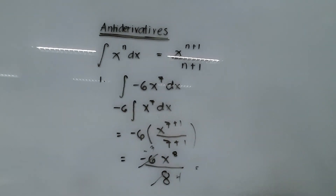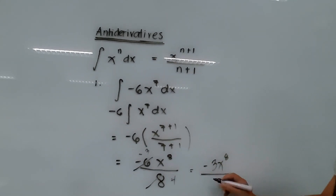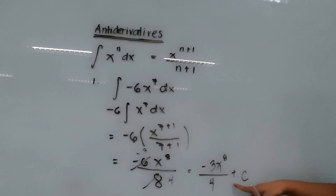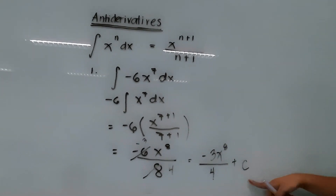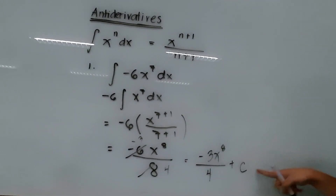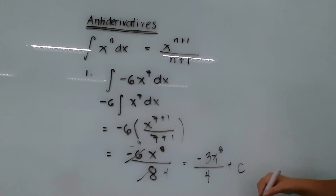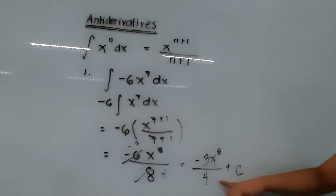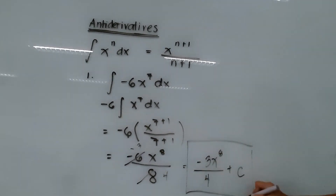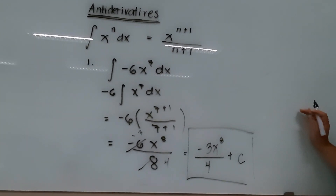The final answer is negative 3x raised to 8 over 4, plus C. Don't forget the plus C, because when we differentiate, all constants become 0. There is no way to recover what constant was lost, so the final answer should always have plus C.